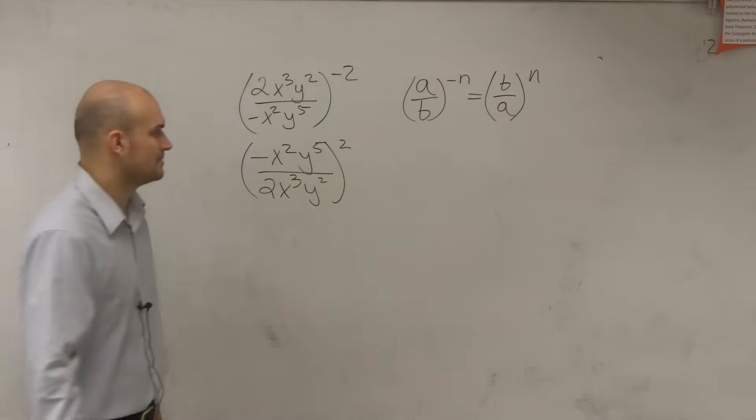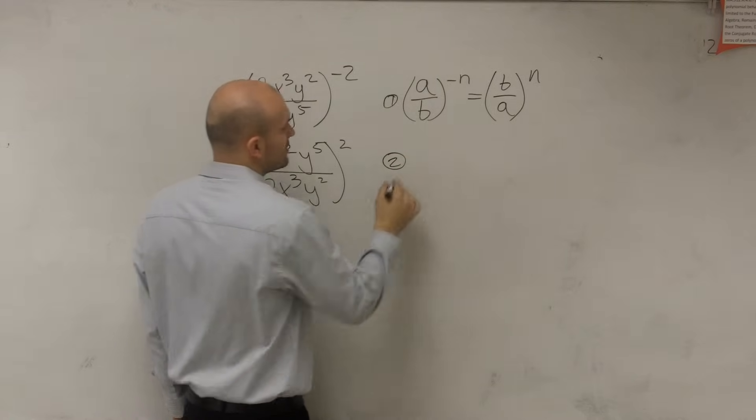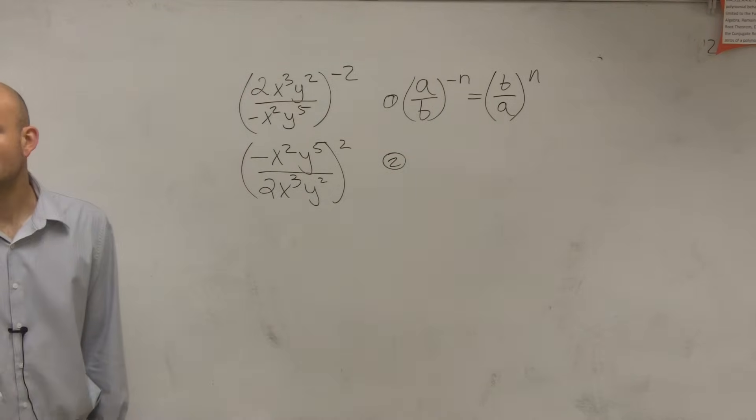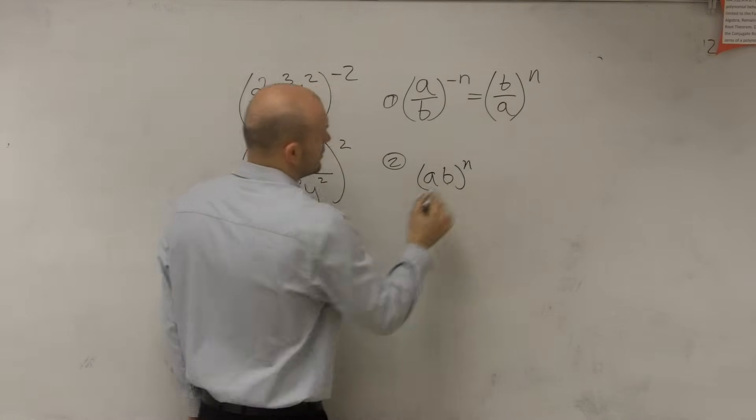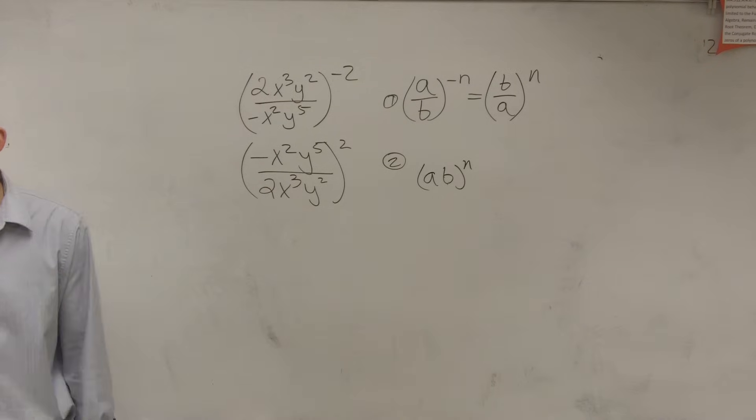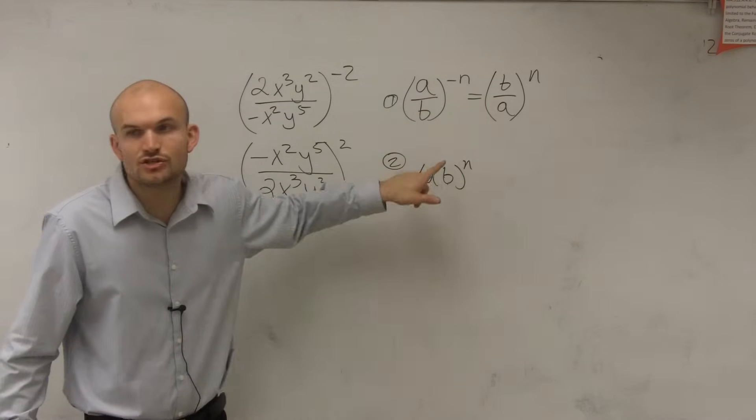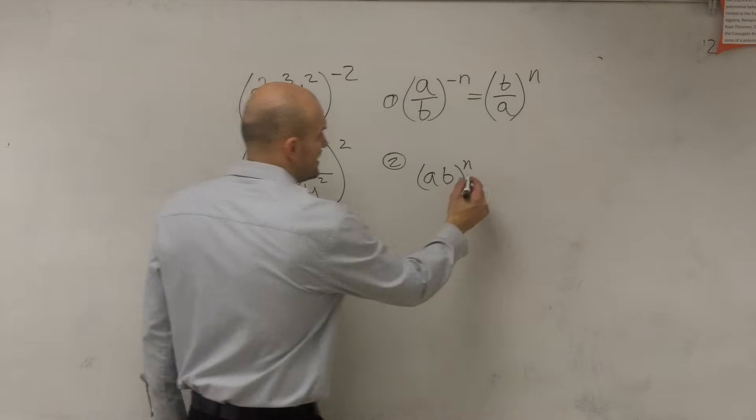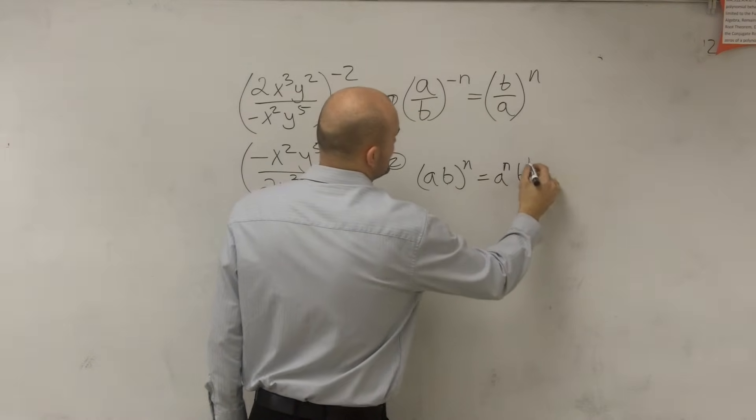The second step is the power-to-product rule. And what the power-to-product rule says is if I have a product raised to a power, then that power is distributed to both of my terms in the product, meaning that goes a to the n and b to the n.